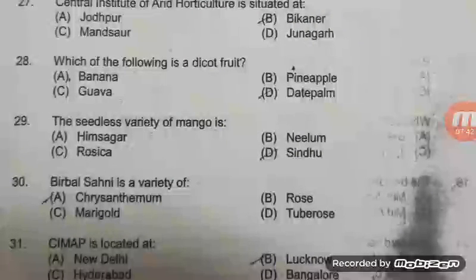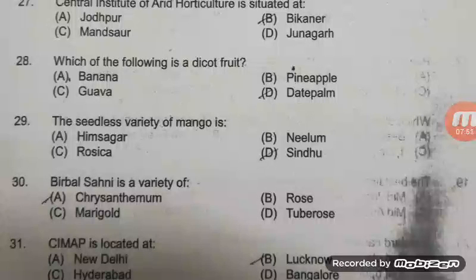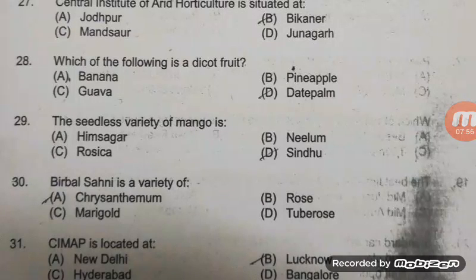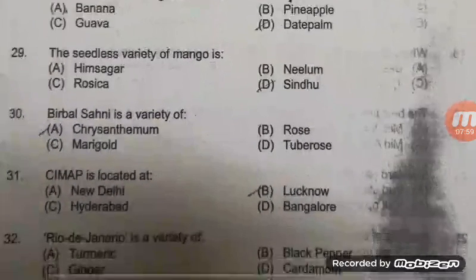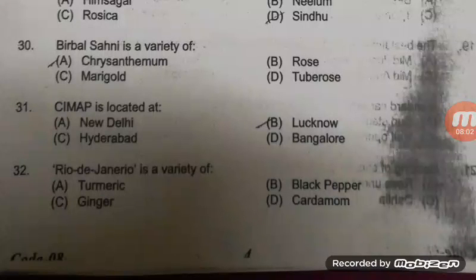The seedless variety of mango is — the right answer is D — Sindhu, which is a cross between Ratna and Alphonso, developed at Regional Fruit Research Station, Vengurla, Maharashtra. Birbal Sahni is a very famous variety of Chrysanthemum — option A is right. CIMAP is located at — option B is right — Lucknow, Central Institute of Medicinal and Aromatic Plants.